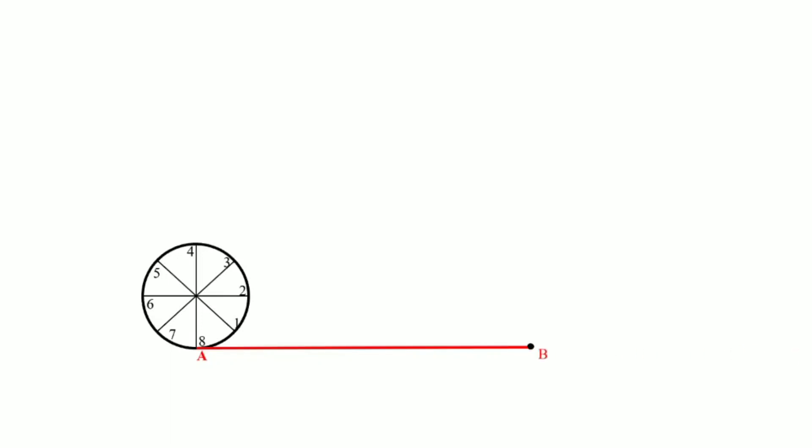When drawing the envelope of a circle, we need a thread or string whose length is exactly equal to the circumference of the circle, that is π×d. So we draw a thread length AB equal to the circumference. Since we divided the circle into 8 equal parts, we also divide the thread length AB into 8 equal parts, naming these points 1 to 8.